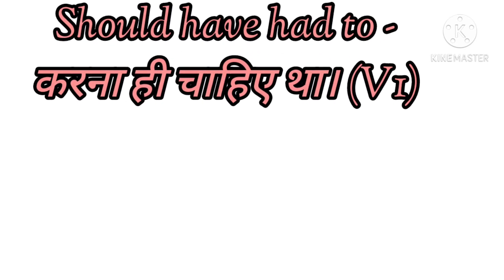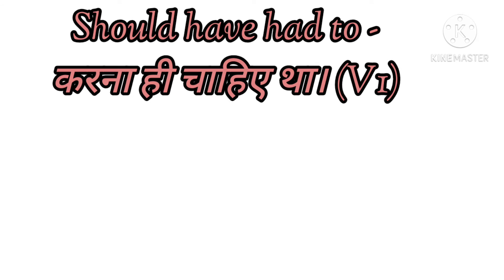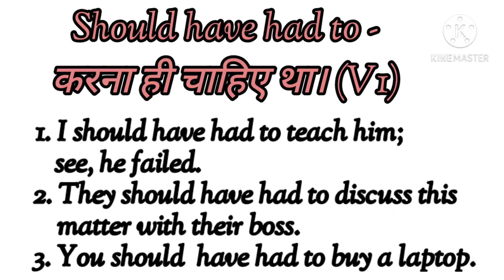Now we will talk about 'should have had to,' which means karna hi chahiye tha. Whenever we use 'to,' we end up using the verb's first form along with it. Examples: I should have had to teach him — see, he failed. They should have had to discuss this matter with their boss. You should have had to buy a laptop. In this way, we always use the verb's first form with 'to' as a preposition.